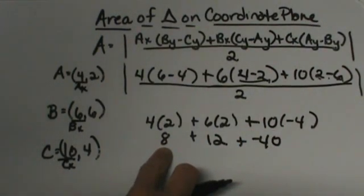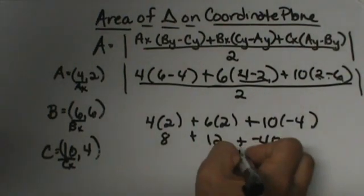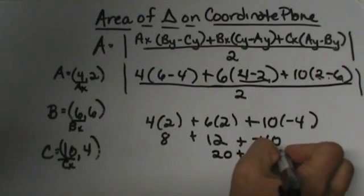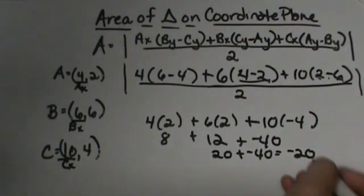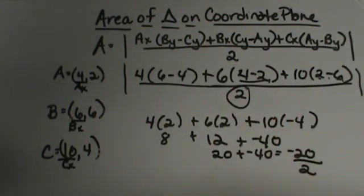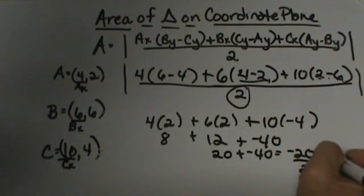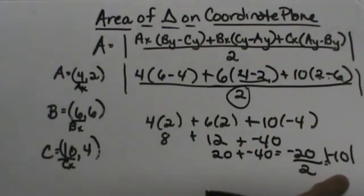So now let's add all this together. 8 plus 12 is 20 plus negative 40 is negative 20. Now I have a negative answer. Remember we have to divide by 2 so that's going to be negative 10. But we know we are going to take the absolute value.